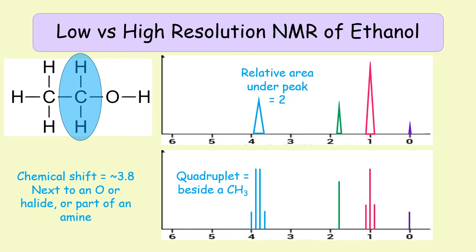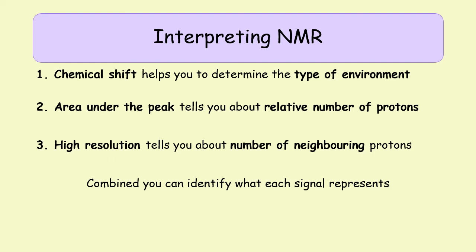When it comes to interpreting NMR, there are three things to do. Firstly, look at the chemical shift — use page 17 to determine what type of environment the proton is in. Secondly, if you're given the integrated area under the peak, that tells you the relative number of protons. Finally, if it's high resolution and each signal is split into a multiplet, use the N+1 rule to work out the number of neighboring protons. All of that together is what allows you to use NMR — it's a really powerful technique, so please make sure you do practice questions on NMR.